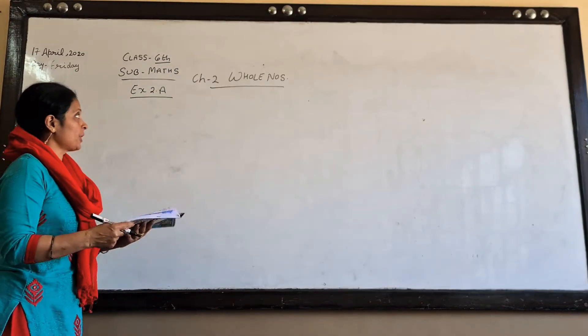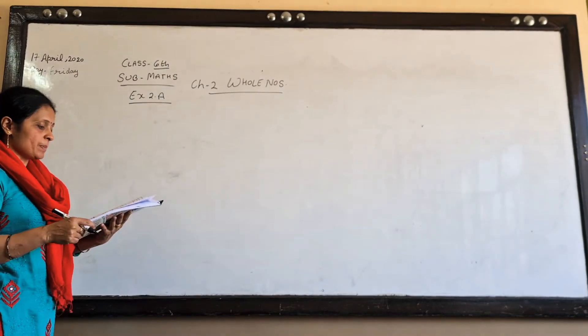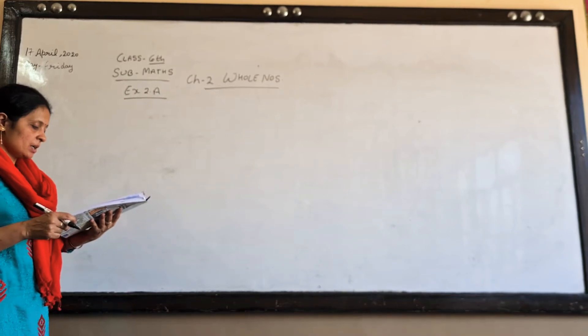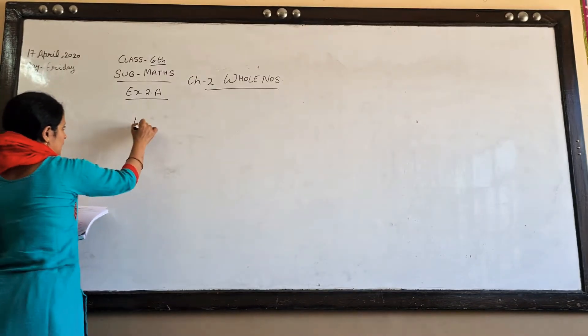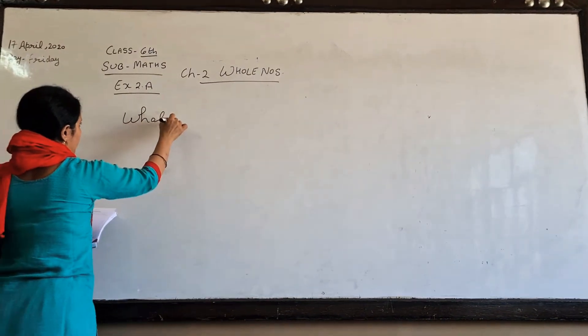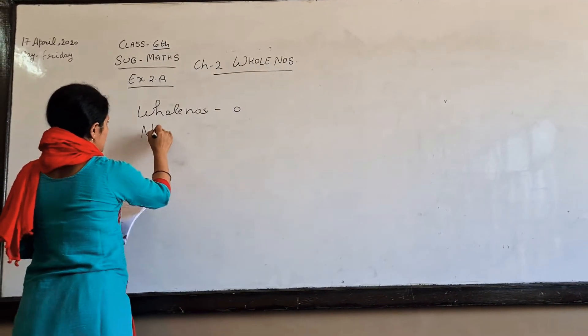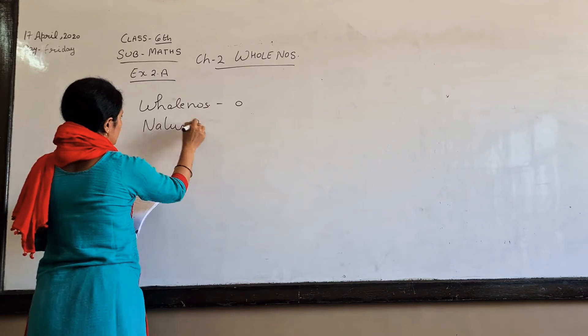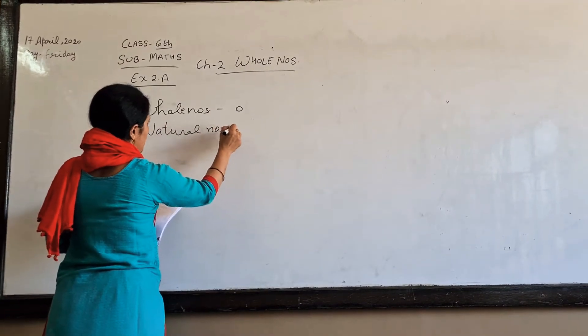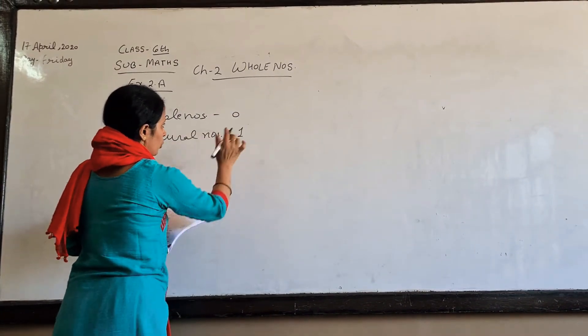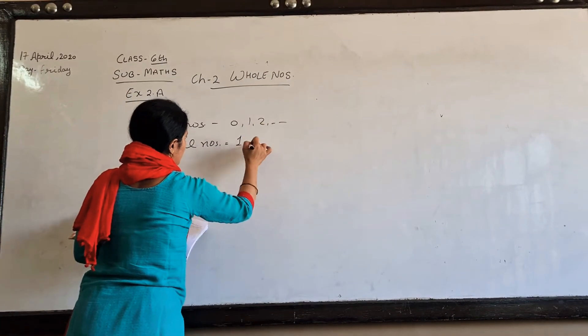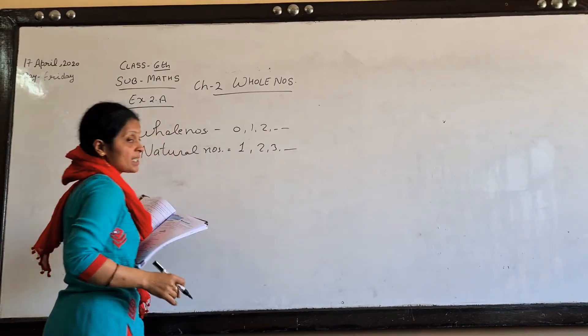This exercise is about whole numbers. Whole numbers are starting with zero. Natural numbers are starting with one. Now I am going to tell you this is starting with one. The next term is starting with one.